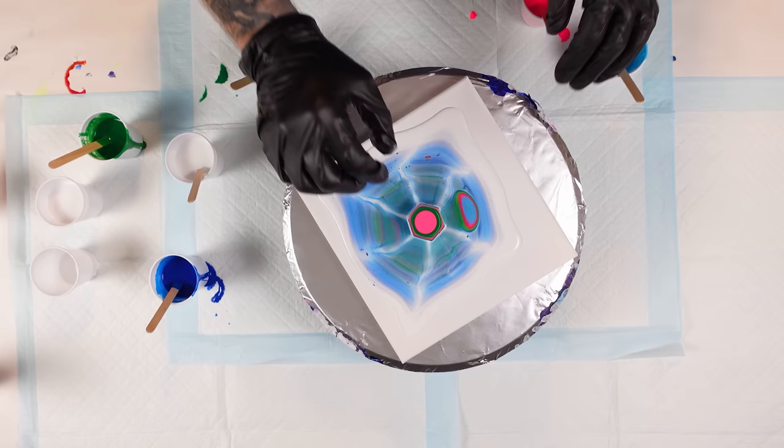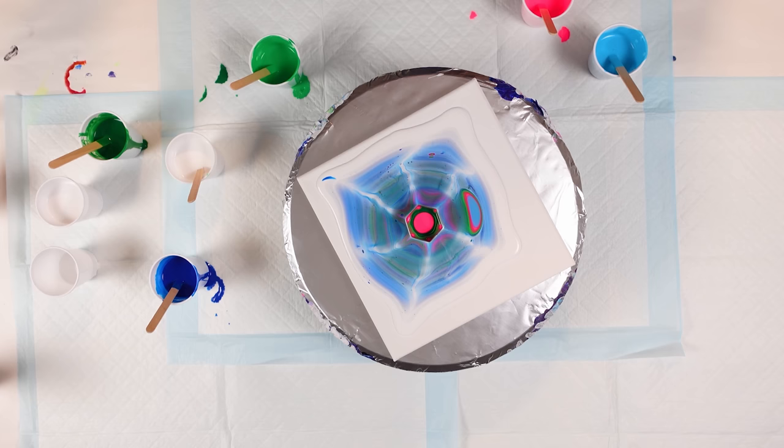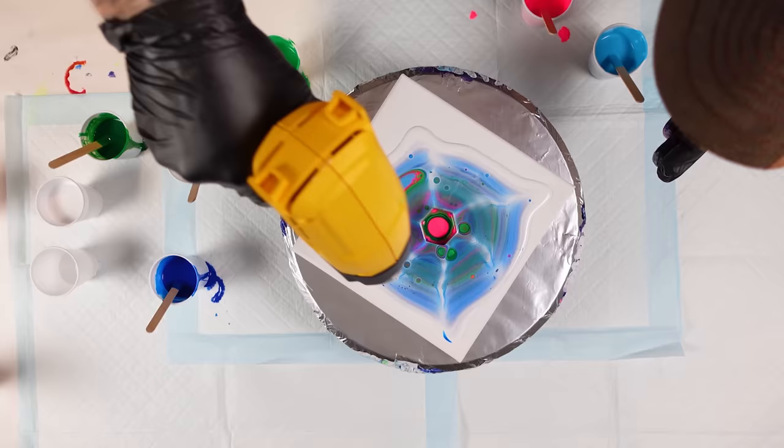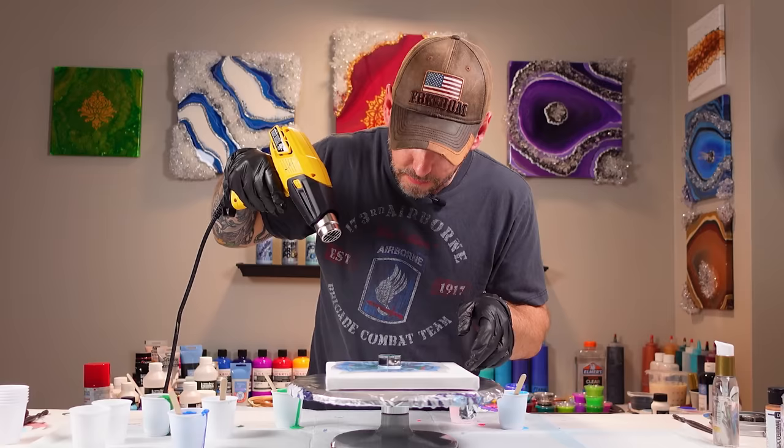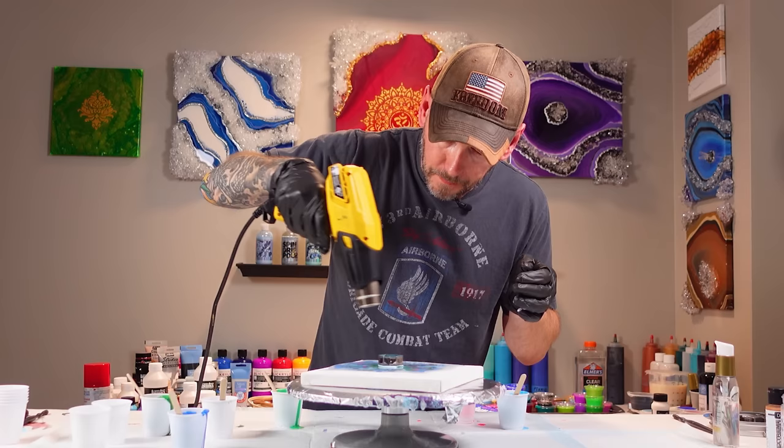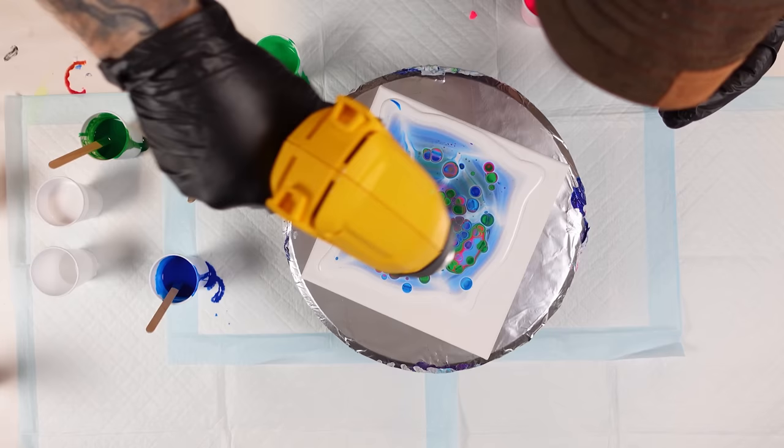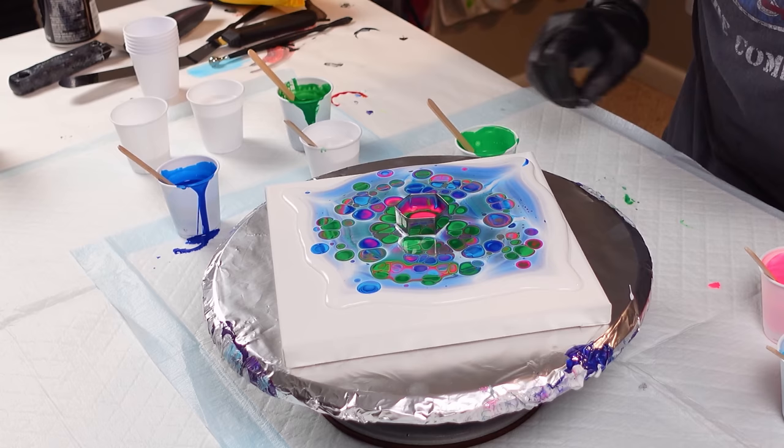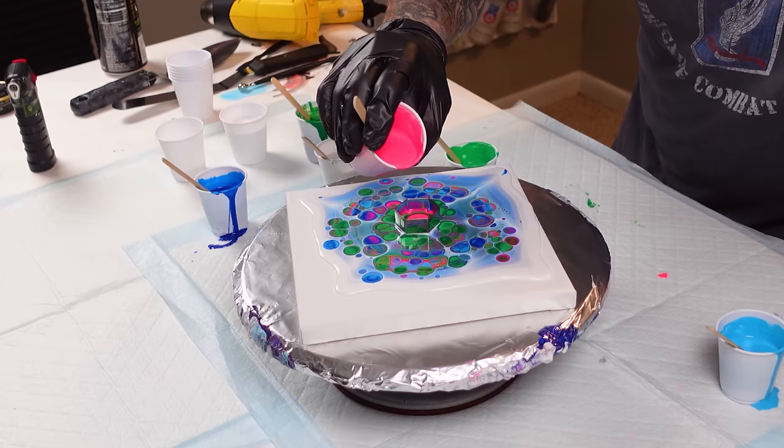All right. Now we're seeing that paint come out. What I'm going to do is hit it with this heat gun because cells are already starting to form on their own. I'm very excited to help them along. Oh my goodness. Look at that. That's gorgeous you guys. But what I am noticing is we need more fluorescent pink to make these colors really stand out.